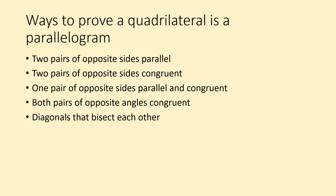There are five different ways that we can prove a quadrilateral is a parallelogram. These are the five ways, exactly as they are written in Delta Math: two pairs of opposite sides parallel, two pairs of opposite sides congruent, one pair of opposite sides parallel and congruent, both pairs of opposite angles congruent, and diagonals that bisect each other.